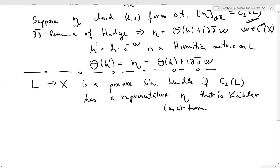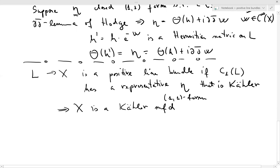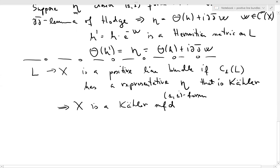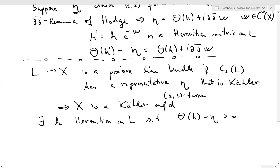This is definitely something that doesn't always happen, but when it does we say that the line bundle is positive. One reason why this doesn't always happen: η being a Kähler form implies that X is a Kähler manifold — and as we've learned, there are plenty of compact complex manifolds that are not Kähler. As shown, there exists a specific Hermitian metric H such that the curvature of H equals η; since this is positive definite, we say in this case that H is a positive metric.